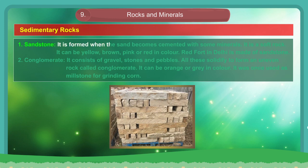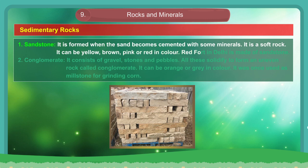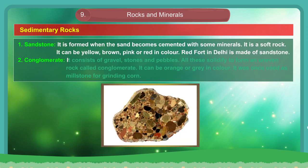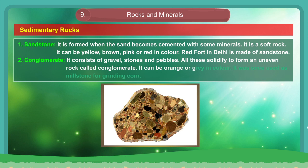1. Sandstone. It is formed when sand becomes cemented with some minerals. It is a soft rock. It can be yellow, brown, pink or red in color. Red Fort in Delhi is made of sandstone. 2. Conglomerate. It consists of gravel, stones and pebbles. All these solidify to form an uneven rock called conglomerate. It can be orange or gray in color. It was once used as a millstone for grinding corn.